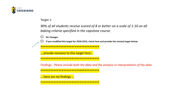As in the mission statement section, the user has the option to provide revisions to the student learning outcome, the measure, and the target by clicking the checkbox next to the words "if you modified this" and then entering the revision in the corresponding editable area. If no revisions are needed, simply check the box next to "no changes."